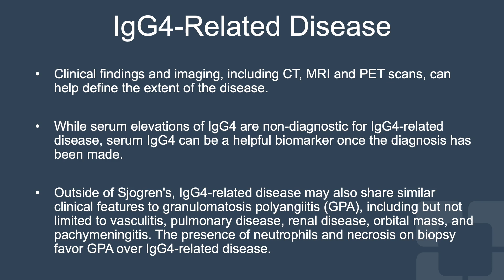Outside of Sjogren's disease, IgG4-related disease may also share similar clinical features to granulomatosis with polyangiitis, known as GPA, including but not limited to vasculitis, pulmonary disease, renal disease, orbital mass, and pachymeningitis. The presence of neutrophils and necrosis on biopsy favors a diagnosis of GPA over IgG4-related disease.